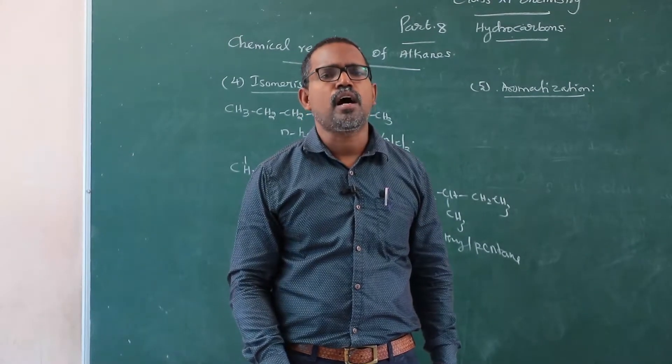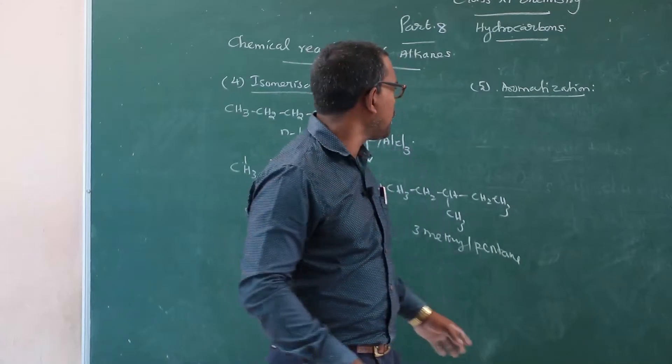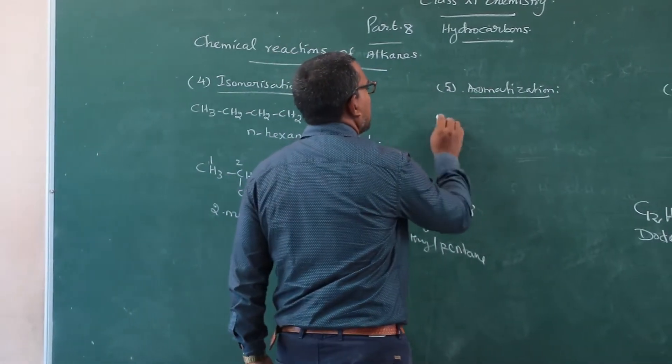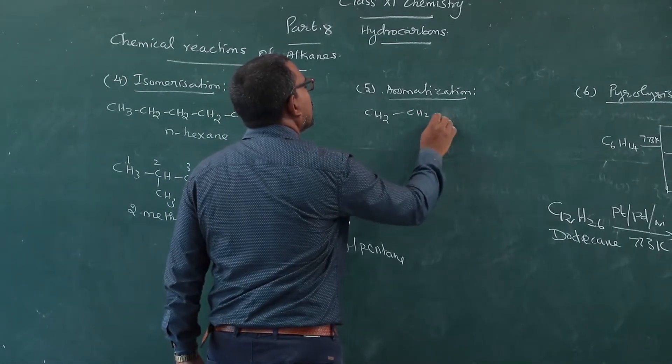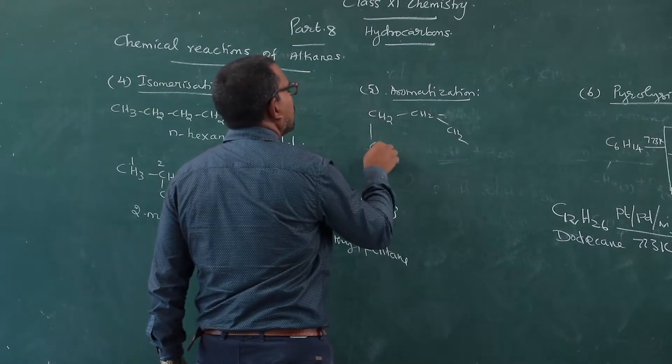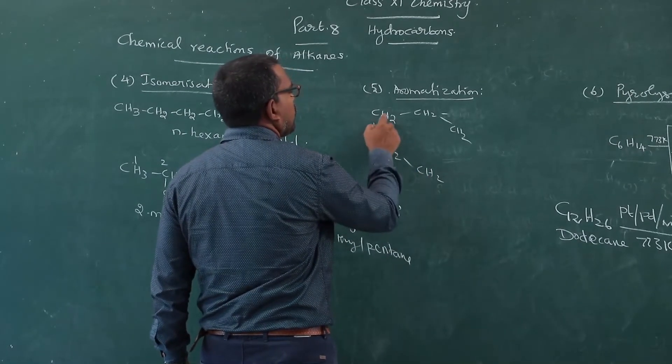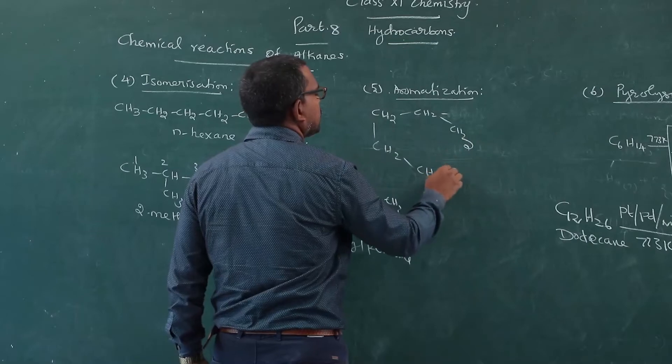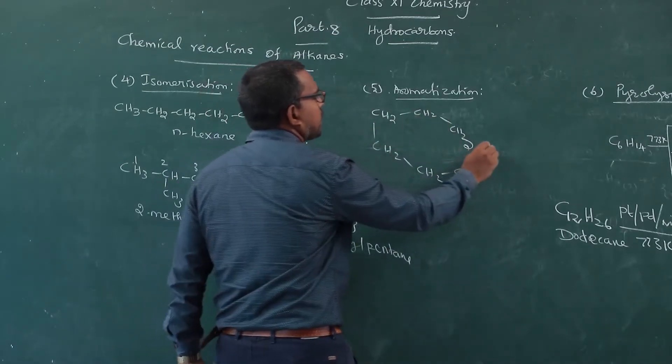The last one is aromatization. The normal hexane, the same normal hexane, normal hexane. 1, 2, 3, 4, 5. CH3-CH2-CH2-CH2-CH2-CH3. 1, 2, 3, 4, 5, 6. Normal hexane.